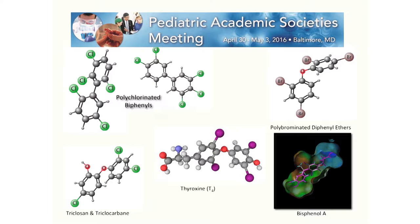I'm going to focus on PCBs — polychlorinated biphenyls — which have a structure very similar to thyroxin. There are also a number of chemicals to which we are all exposed that have a similar biphenolic or diphenyl ether structure, such as polybrominated diphenyl ethers used as flame retardants, and antibacterial agents that are also chlorinated diphenyl ethers. Bisphenol A itself has a structure that fits within the binding site of the thyroid hormone receptor.